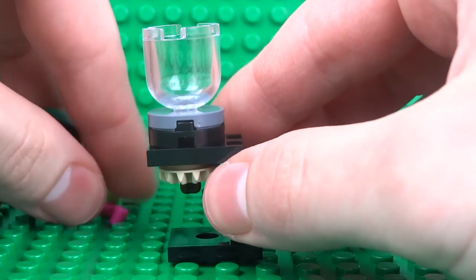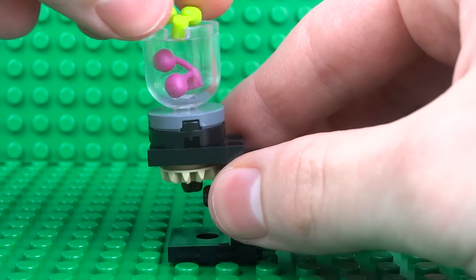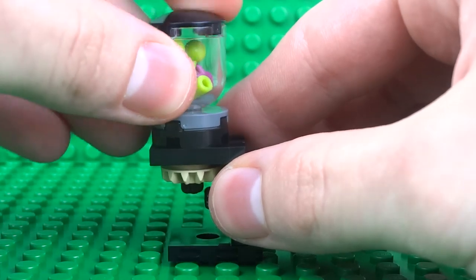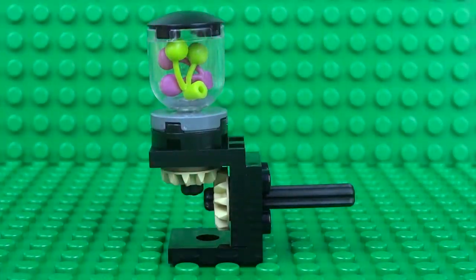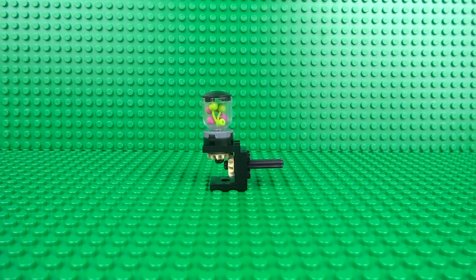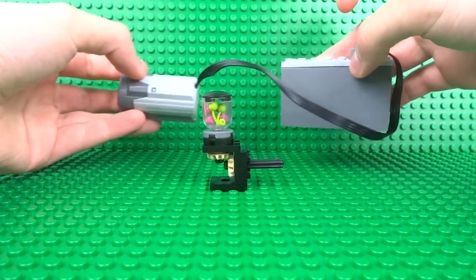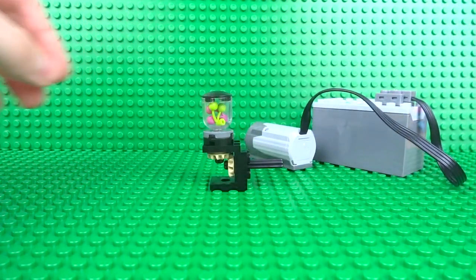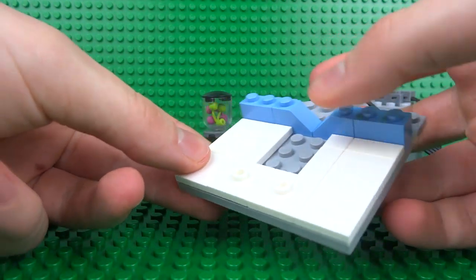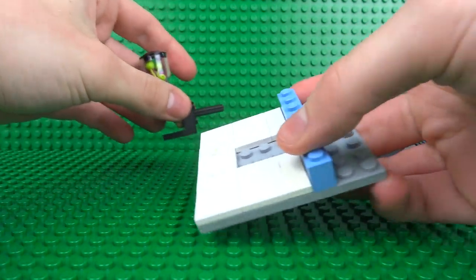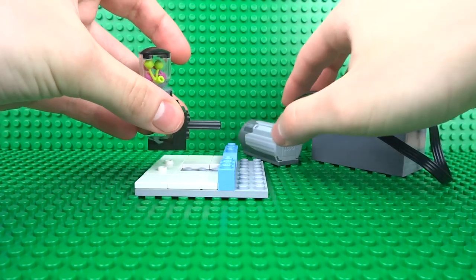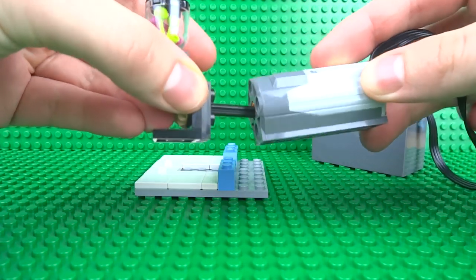So first let's put these fruits away that way they're nice and safe and ready to be blended. So for this part you'll obviously need a power functions motor and a battery box, and I also recommend a base or somewhere to place your blender.